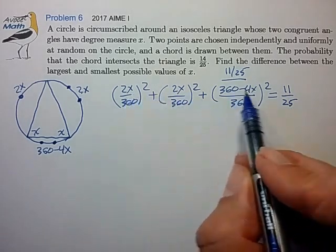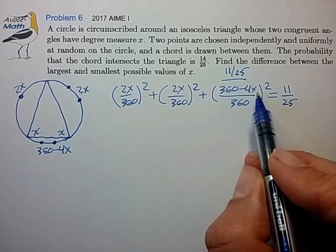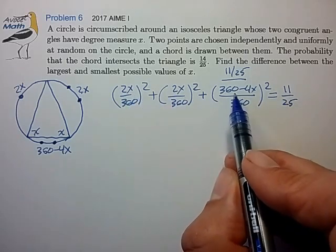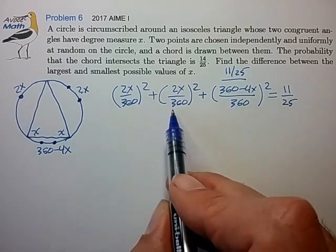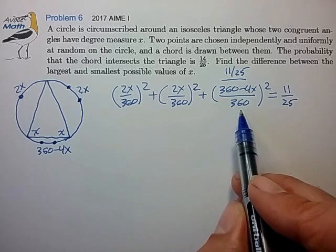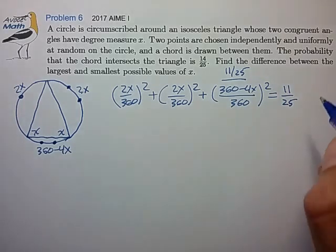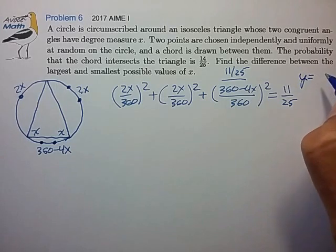So it looks like we need to solve for X. There are probably two roots, and we have to find the difference between the two roots of this quadratic. Now I notice we're carrying around this large number 360, and that's going to get a bit messy. So let's do a variable substitution here to knock down the size of these numbers.